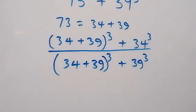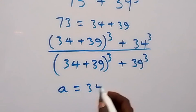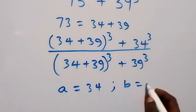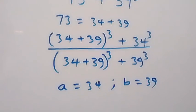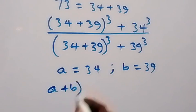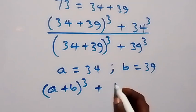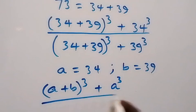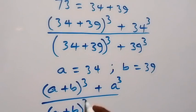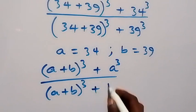From what we have here now, we can represent 34 with a letter. So let a be equal to 34 and b be equal to 39. That is, this will become (a plus b) raised to power 3, plus a raised to power 3, over (a plus b) raised to power 3, plus b raised to power 3.